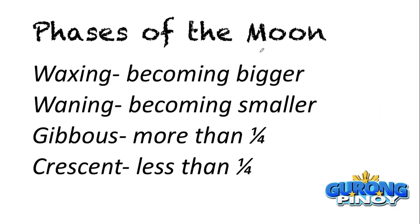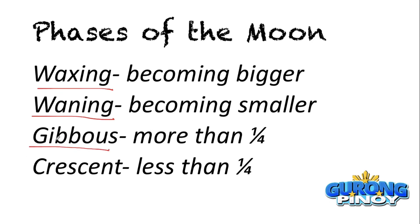Now we move to the different phases of the moon. You need to learn four key terms. Waxing means the moon is becoming bigger. Waning means the moon is becoming smaller. Gibbous means you can see more than one-fourth of the moon. Crescent is the opposite of gibbous — it means you can see less than one-fourth of the moon.